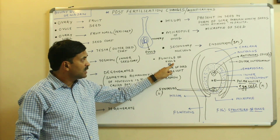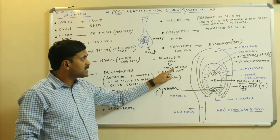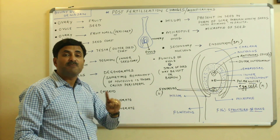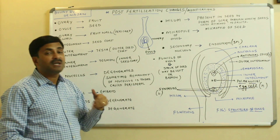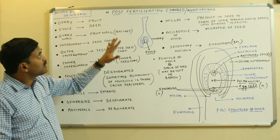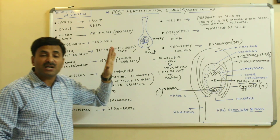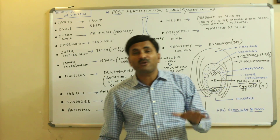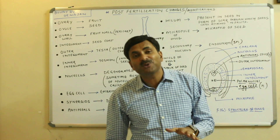The funicle is the stalk of the ovule. After fertilization, the funicle may form the stalk of the seed, but it is not always necessarily present — sometimes it is broken down. These were the post-fertilization changes or modifications which occur in angiospermic plants. Thanks for watching; hope you liked this video.